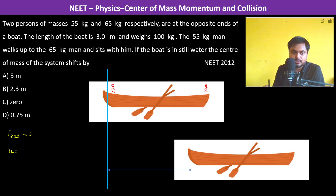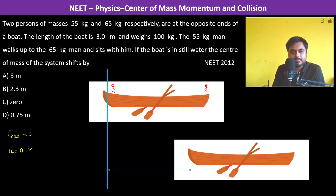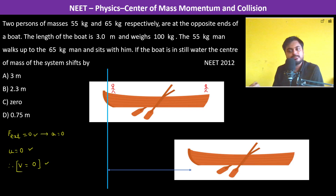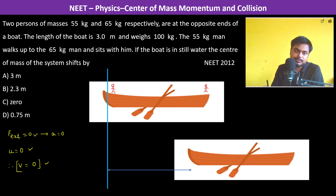Since the boat is stationary, u is equal to zero. With F external equal to zero, the acceleration is zero, so the velocity of the center of mass is also zero. Therefore, the center of mass will not shift — it remains fixed.